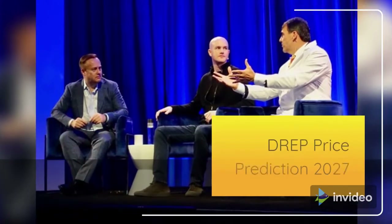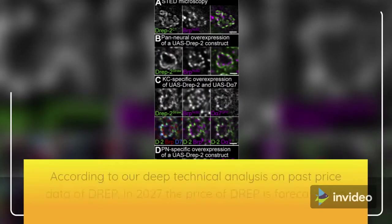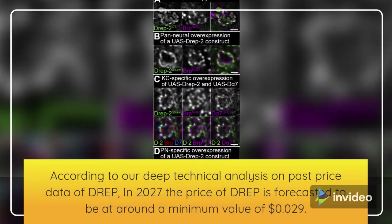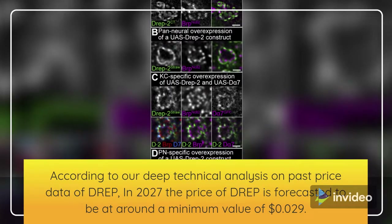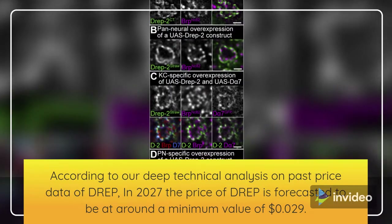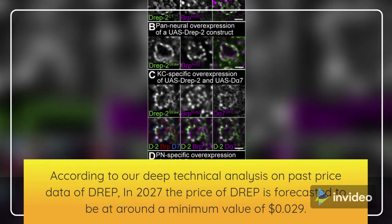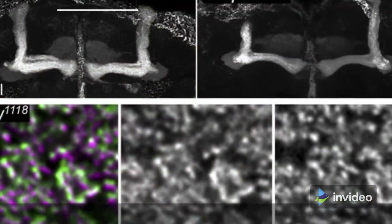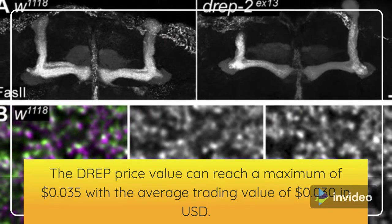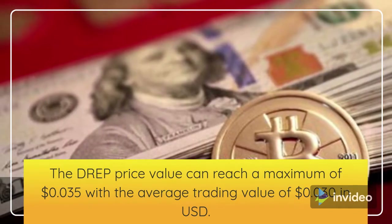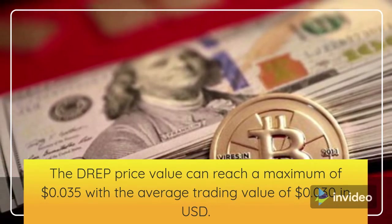DREP Price Prediction 2027. According to our deep technical analysis on past price data of DREP, in 2027 the price of DREP is forecasted to be at around a minimum value of $0.029. The DREP price value can reach a maximum of $0.035 with the average trading value of $0.030.